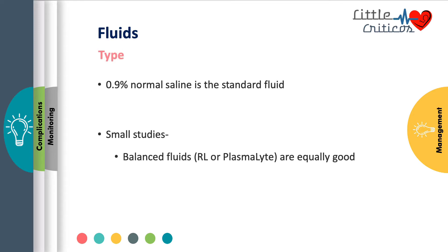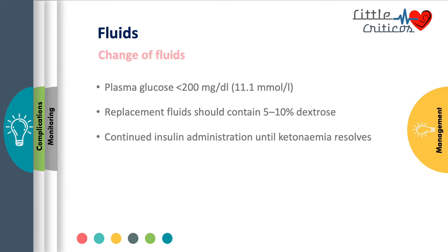Beyond the first hour, maintenance fluids obtained from the Holliday-Segar equation are added to the deficit, which is usually assumed as 65 to 85 mL per kg. By this calculation, the usual volume needed is 1.5 to 2 times the maintenance. Saline has remained the standard fluid in all these children. Small studies comparing balanced fluid with 0.9% saline found them to be equally efficacious; however, larger studies are needed before using balanced fluids in practice.